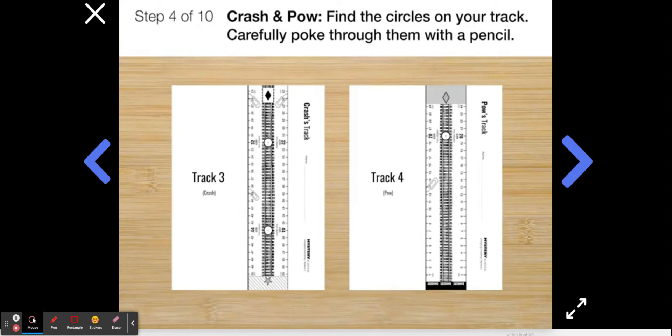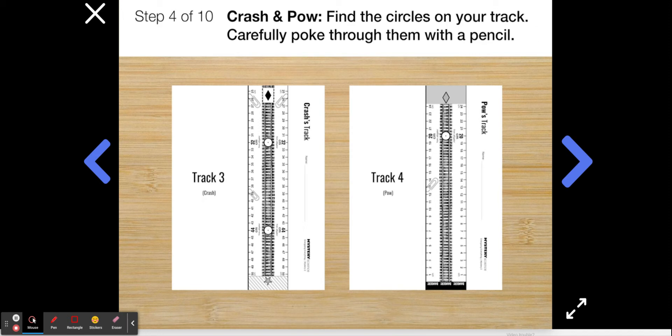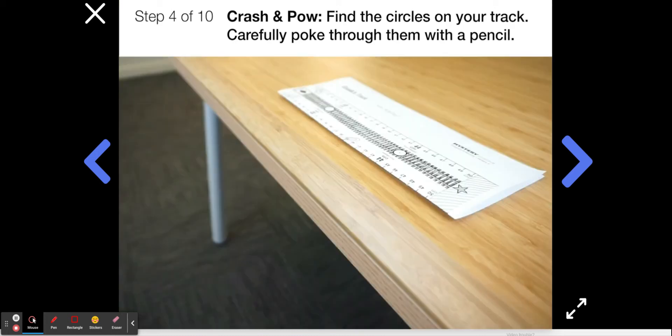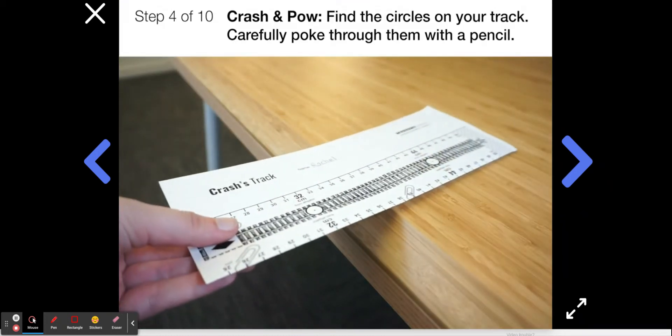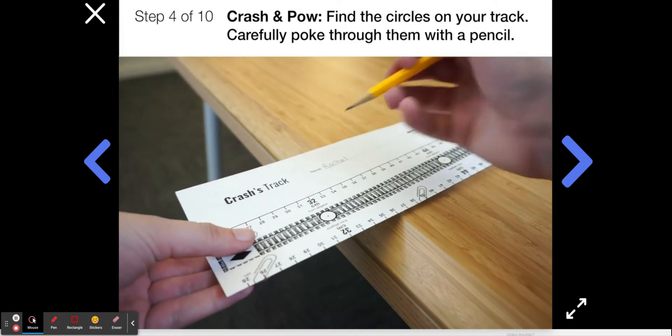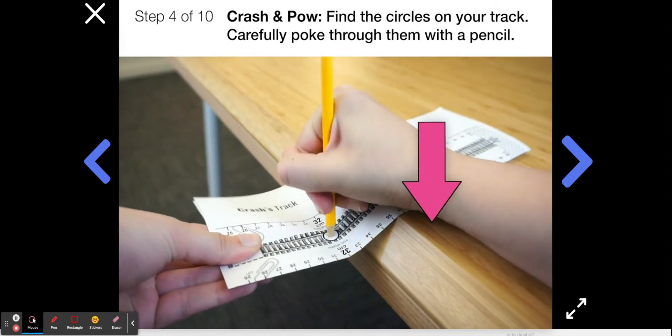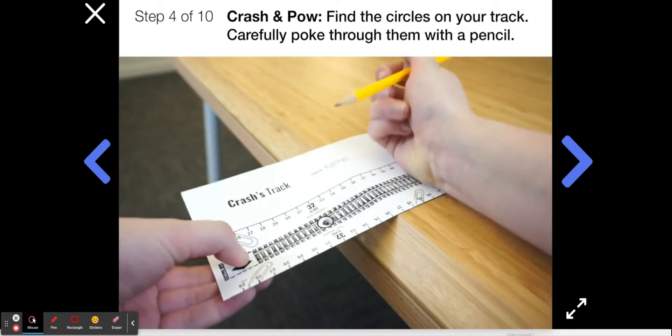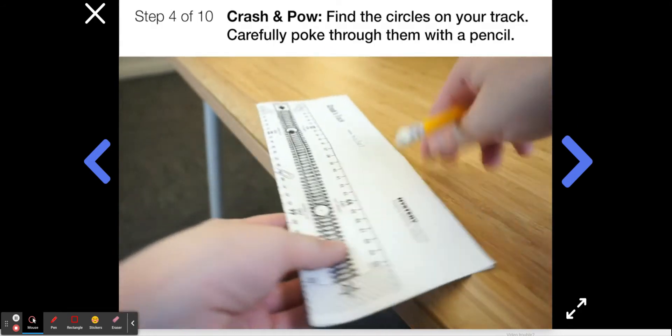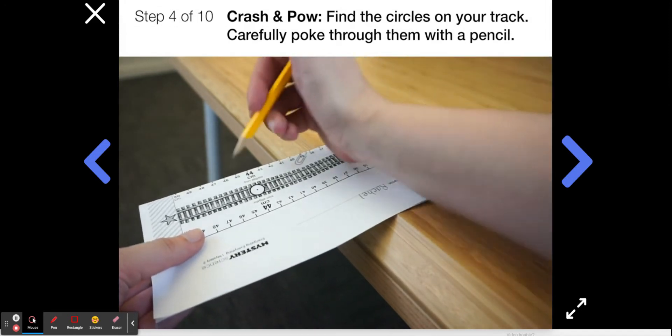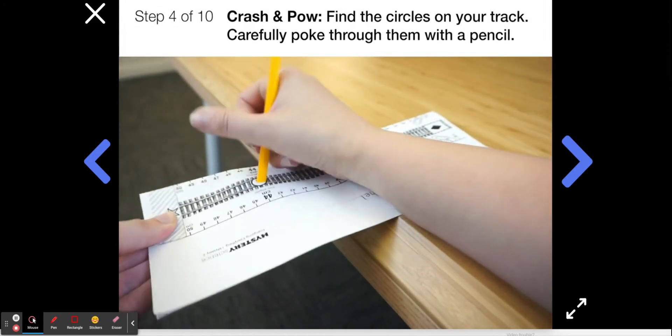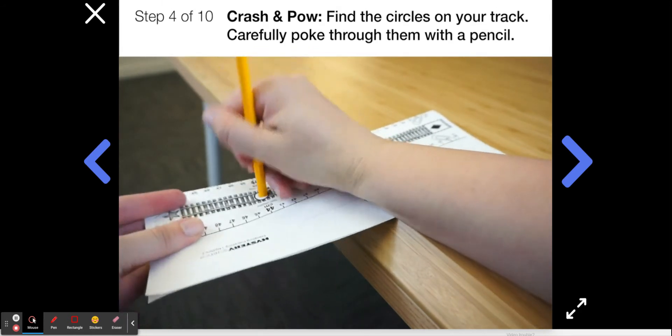Now this next step is just for crash and pow. Boom and clunk, you can watch what they're doing and help them out. Crash and pow, on your track pieces, notice that there are these circles. We're going to poke holes in these in order to give the marble somewhere to sit on your track. To do that, slide the paper so the circle is slightly off your desk. Then, keeping one hand on the table and holding the paper in place like this, take your pencil and use it to carefully and slowly poke a hole in the circle. It takes a little effort because you'll be poking through two pieces of paper. Be sure to do this for every circle on your track.